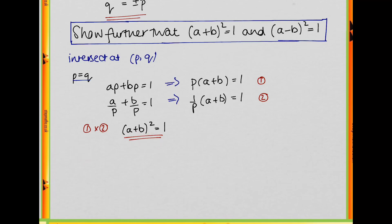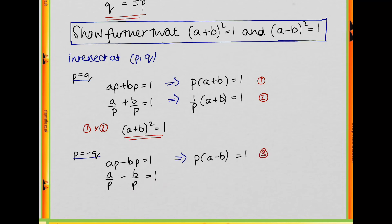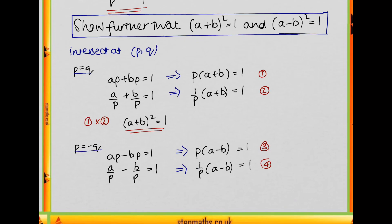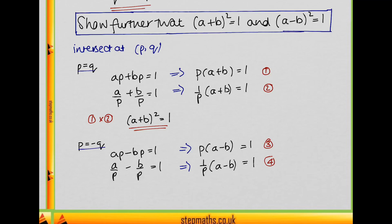Now consider the case p = -q. The point (p, q) lies on both the line and curve, so substituting: ap - bp = 1 for the line, and a/p - b/p = 1 for the curve. This gives p(a - b) = 1 and (1/p)(a - b) = 1. Multiplying these together gives (a - b)² = 1, as required. So we've shown both conditions in the question.